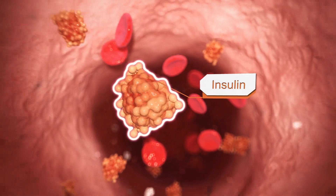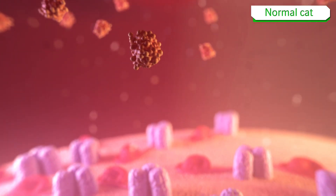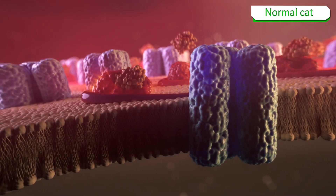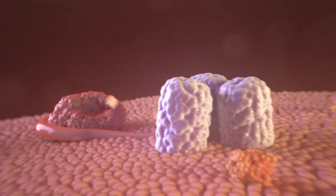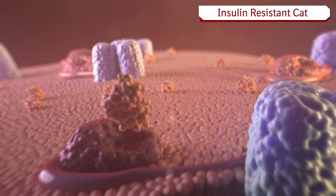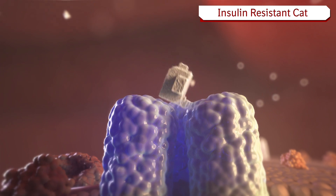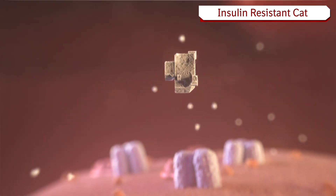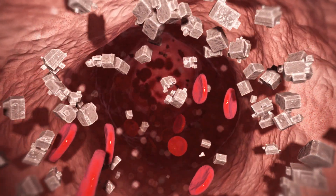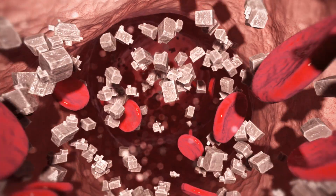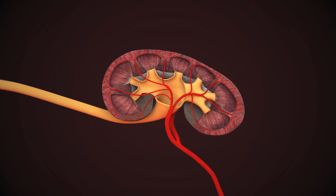Cats typically have type 2 diabetes, a condition in which insulin resistance prevents cellular uptake of glucose. There are several mechanisms of insulin resistance, including decreased insulin receptors and receptor defects. The glucose that doesn't enter the cells accumulates in the bloodstream.